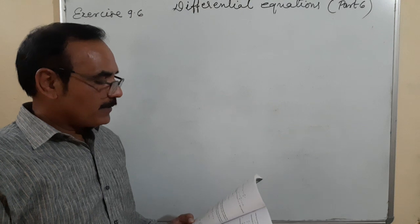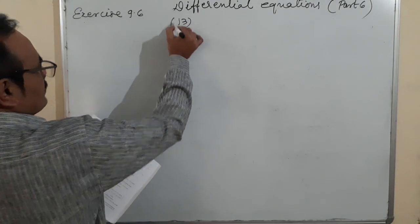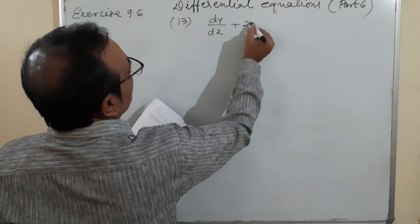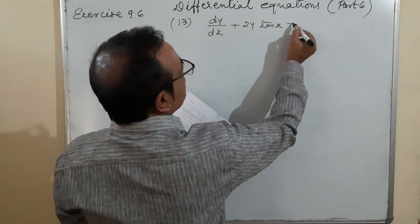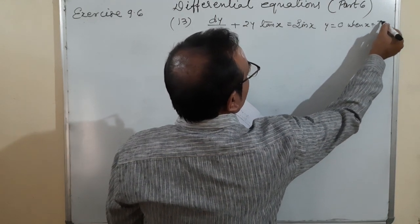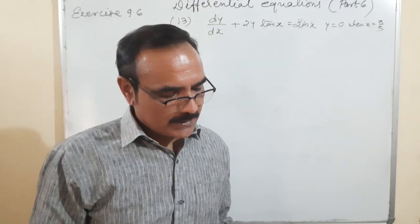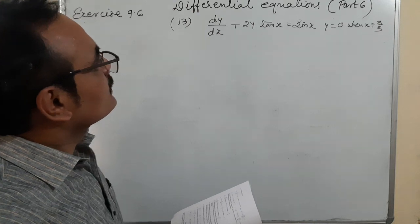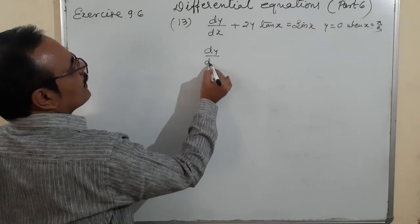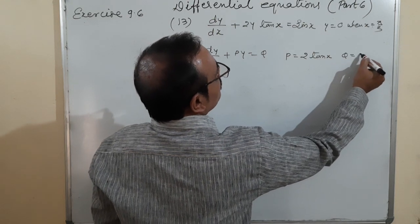Now we are moving to particular solutions, questions 13 to 18. Question 13: dy/dx + 2y tan x = sin x, with condition y = 0 when x = π/3. Comparing with dy/dx + Py = Q: P = 2 tan x and Q = sin x.